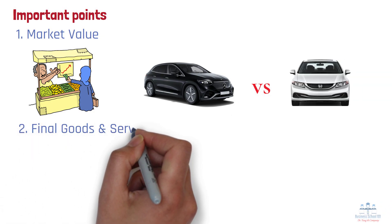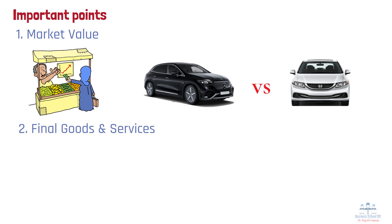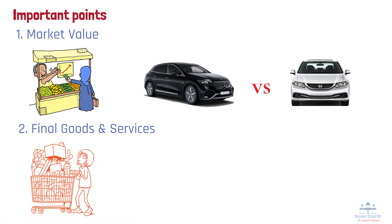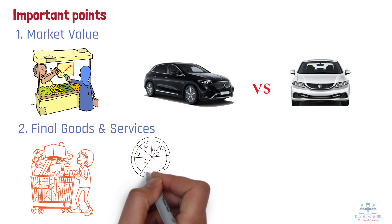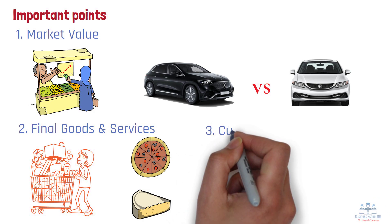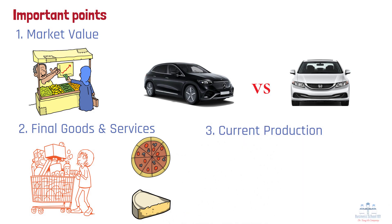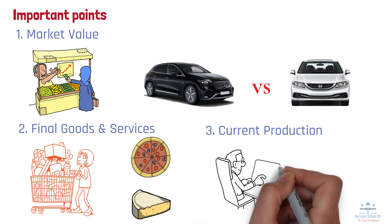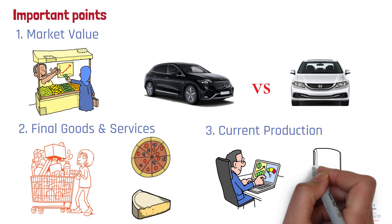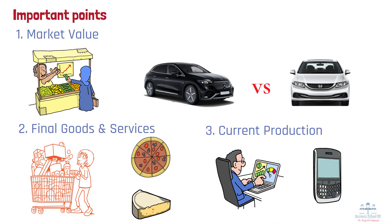Number 2: Final goods and services. We only count final goods — those sold to the end consumer. So the cost of a pizza counts in GDP, but the cost of the cheese that went into making it does not. Number 3: Current production. GDP includes only goods and services produced within the specified time period. So if you sell an old phone, it won't count towards GDP because it was produced in the previous year.